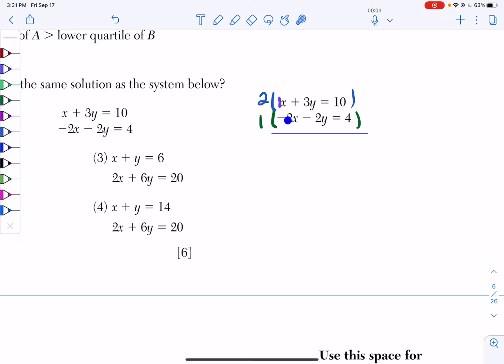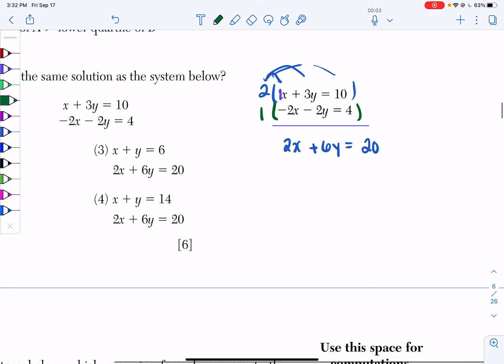Now, the reason I'm not distributing a negative 2 is because I have a positive and a negative, and that's exactly what I want. So we're going to distribute. 2 times 1 is 2, so I have 2x. 2 times 3y is 6y, and 2 times 10 is 20. Now I'm going to distribute my 1. 1 times anything is itself, so this equation does not change. So I actually am just going to get negative 2x minus 2y equals 4.